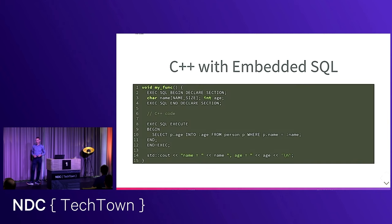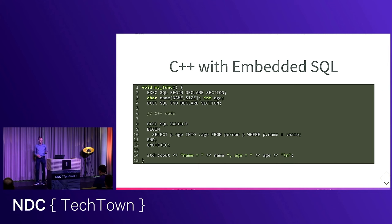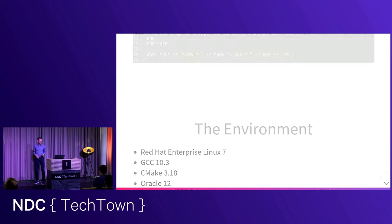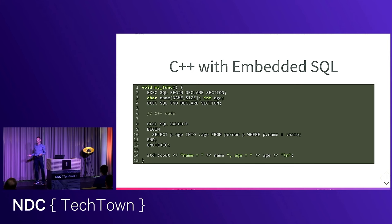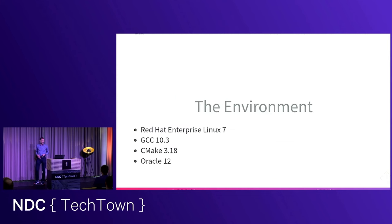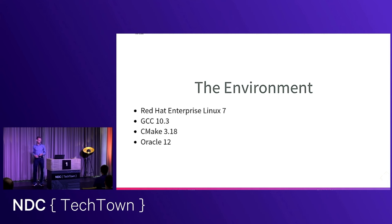In case you're not familiar with embedded SQL in C++, this is a simple toy example of how it looks. You have EXEC SQL and then you can declare variables or execute SQL code right in the middle of your C++ code. To work with that you have to use a precompiler provided by Oracle. I specifically target Red Hat Enterprise Linux 7 with GCC 10, CMake 3.18, and Oracle 12.